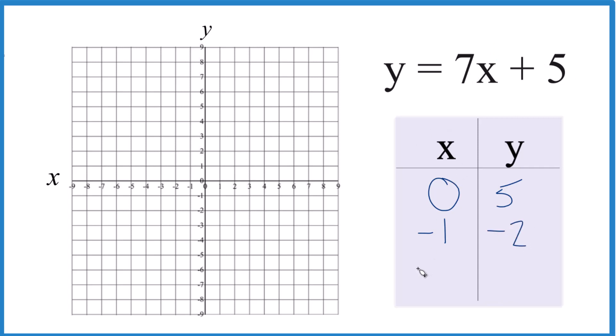How about negative 2 here? 7 times negative 2, that's negative 14. Negative 14 plus 5 is 9. Just barely fits, but we're good there.